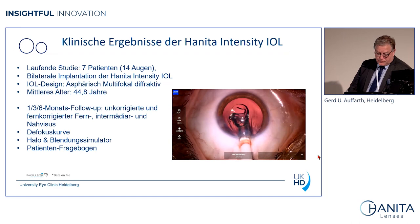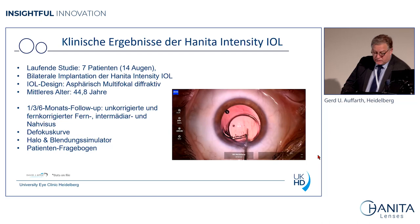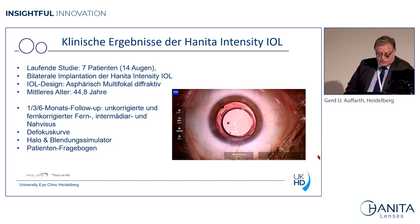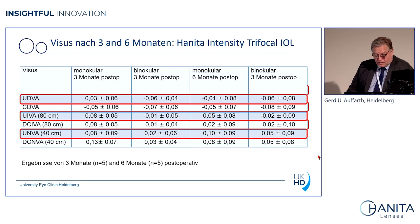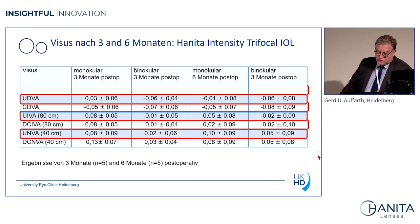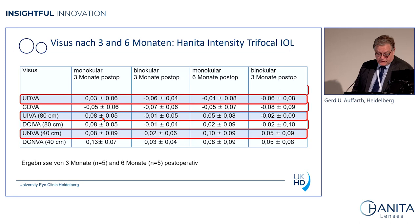Now for the first clinical cases where we implanted the Intensity: seven patients initially. For the very first patient I used the Haigis formula and ended up slightly hyperopic, so I switched to the Barrett Universal II and achieved very nice results. Visual acuity was measured at three and six months, monocular and binocular. Using the logMAR scale as standard, we are around 0.0 logMAR — meaning 1.0 decimal — at all distances, with extremely small standard deviations. Uncorrected distance, uncorrected intermediate, and uncorrected near were all between 0.8 and 1.0, improving further at six months to better than 0.0 logMAR.